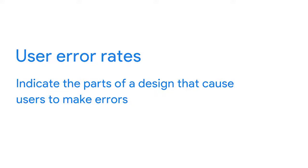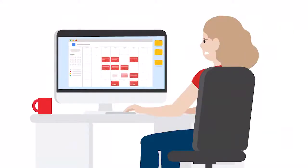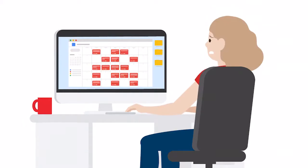The third KPI, user error rates, indicates the parts of a design that cause users to make errors — for example, clicking on the wrong icon when trying to check out their cart. User error rates help point to areas where you need to make improvements to the UX. Keep in mind that just because a design element has a low error rate doesn't necessarily mean it's a strong design. Study participants could use the product correctly but still not understand what they're doing, which can cause as much frustration as not being able to complete an action.